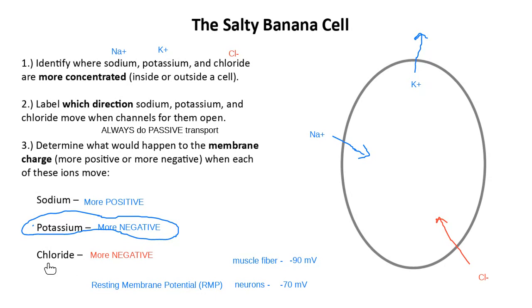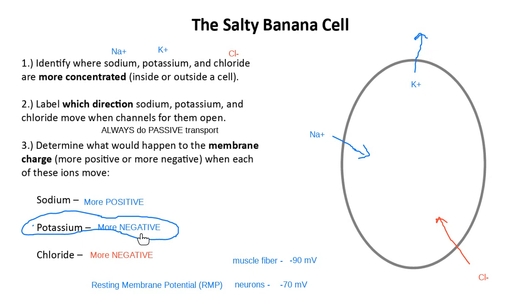If you send a message that opens a chemically-gated chloride channel, the charge on the membrane gets more negative and the neuron doesn't want to talk to anybody. Or if a message opens a chemically-gated potassium channel, potassium goes outside and the membrane charge also gets more negative. Keep the salty banana in mind when talking about the kinds of messages neurons can send each other.